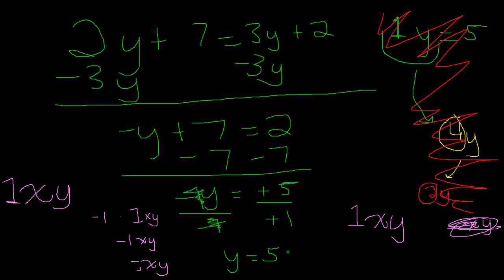If we plug this back in to check, we get 2 times 5, which is 10, plus 7 is 17. On the other side: 3 times 5 is 15, plus 2 equals 17. Would you look at that! So we get a big check mark for this equation because it works.